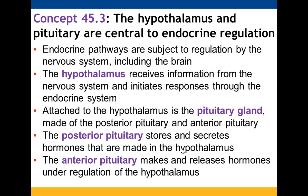The hypothalamus and pituitary are essential to endocrine regulation. These pathways are regulated by your nervous system, including your brain. The hypothalamus receives information from the nervous system and initiates responses in the endocrine system. The pituitary gland is attached to the hypothalamus and consists of the posterior pituitary and the anterior pituitary. The posterior pituitary stores and secretes hormones made by the hypothalamus, while the anterior pituitary makes and releases hormones under hypothalamus regulation.